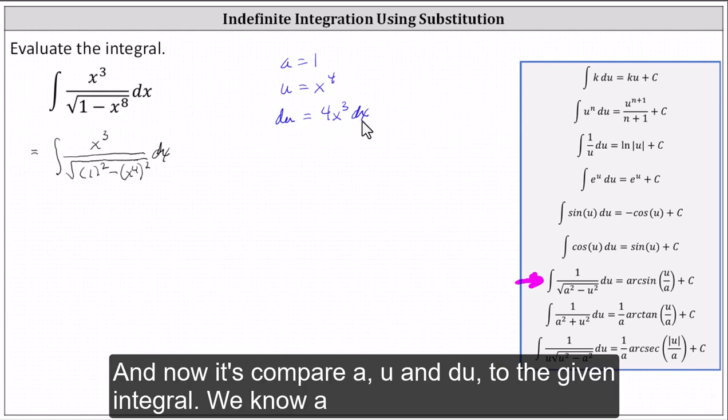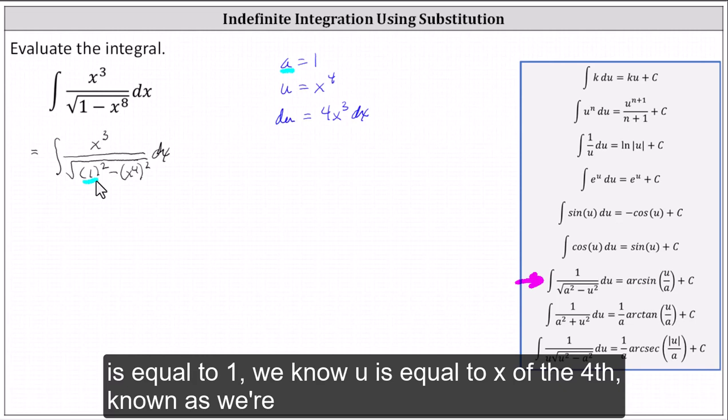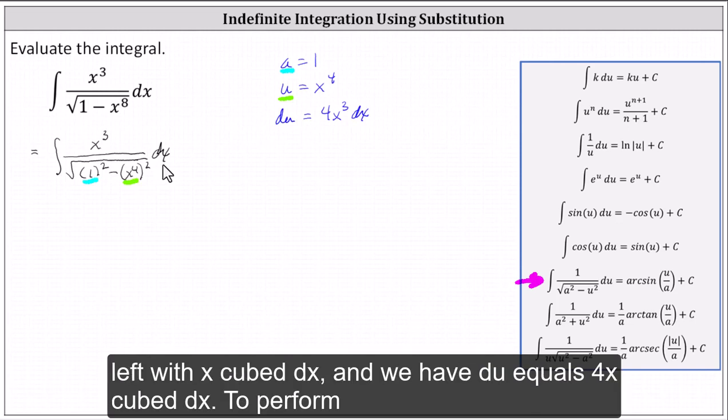And now let's compare a, u, and du to the given integral. We know a is equal to one. We know u is equal to x to the fourth. Notice we're left with x cubed dx, and we have du equals four x cubed dx.